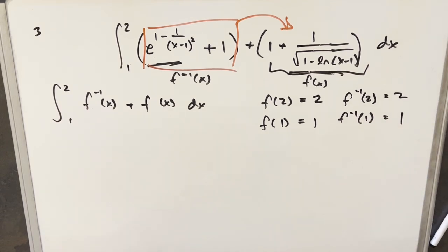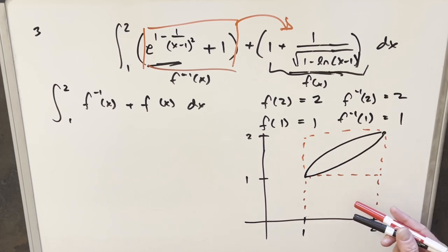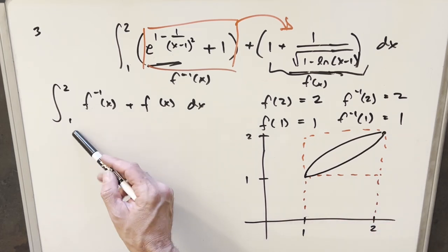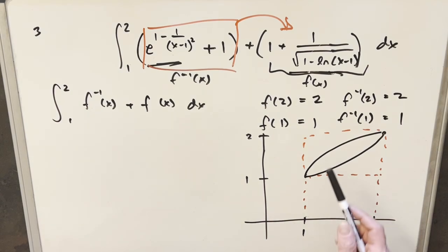Okay, now I have a rough graph of this thing over here to the right. And you notice for our graph, we're going from 1 to 2 because that's our bounds here. And it's important how we established these endpoints, right?